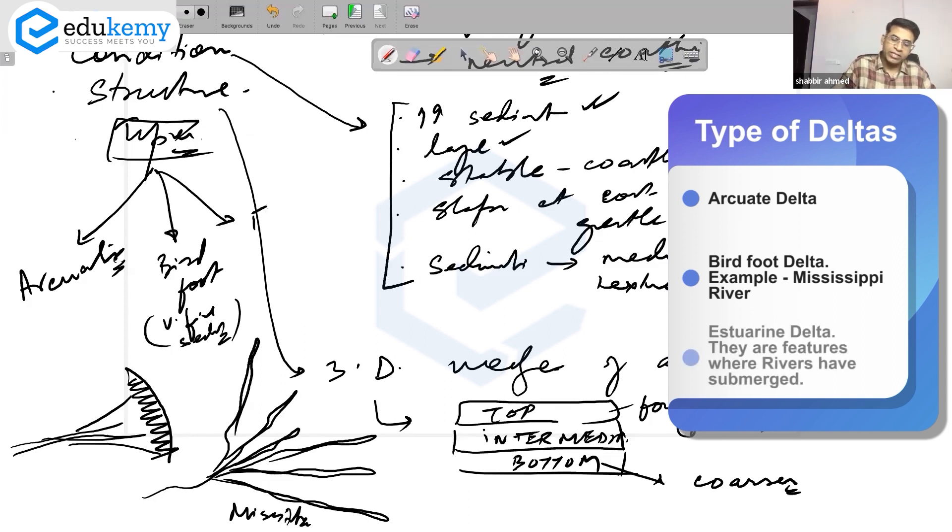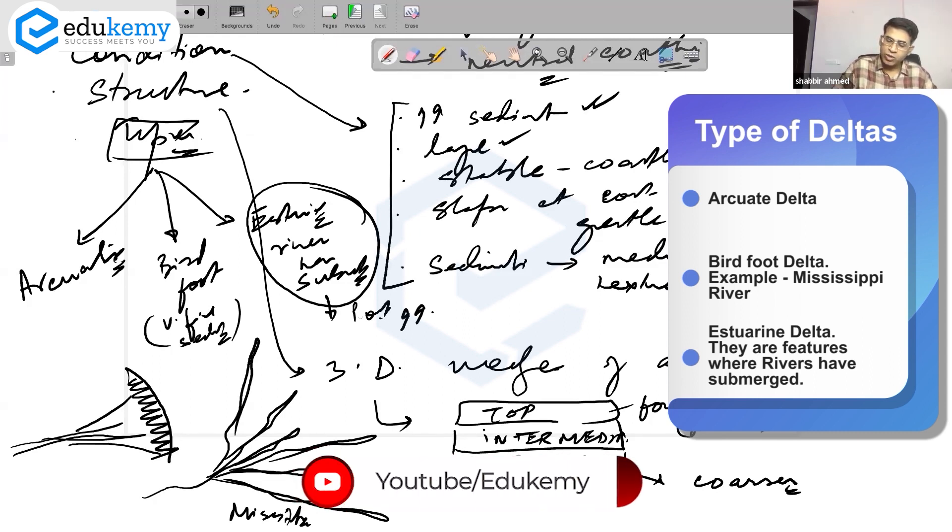The third one is estuarine deltas. They are features where the river has submerged and ultimately becomes a part of the coastline. Estuaries are very important for ports. These areas are important ecologically and can also have mangroves.